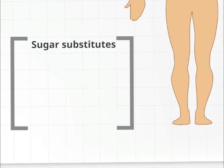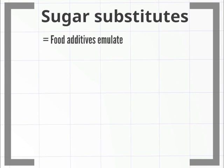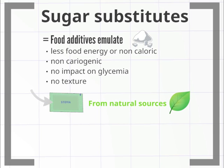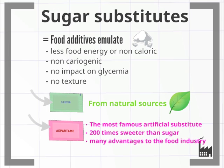Sugar substitutes: A sugar substitute is a food additive that emulates the effect of sugar in taste, often sweeter, usually with less food energy or non-caloric, non-cariogenic, with no impact on glycemia and no texture. Some sugar substitutes, like stevia, are natural and some are synthetic. The most famous artificial sweetener is aspartame — about 200 times as sweet as sugar and totally odourless — presenting many advantages to the food industry. However, its safety has been examined and questioned extensively, resulting in a media crisis in 2005.